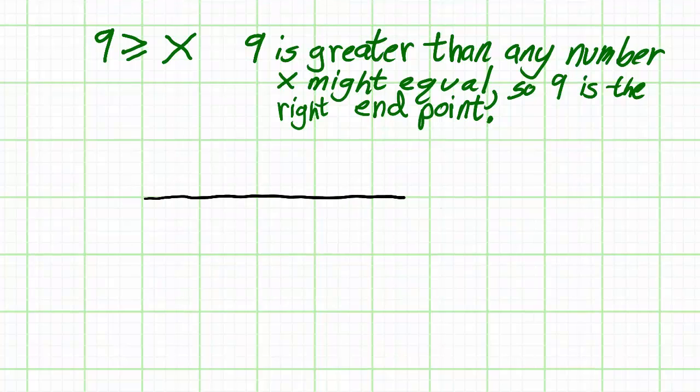9 is going to be the rightmost endpoint since it's greater than anything x might equal.